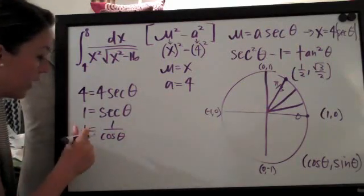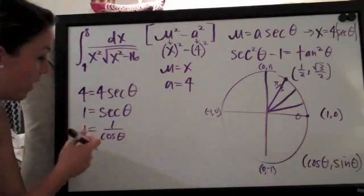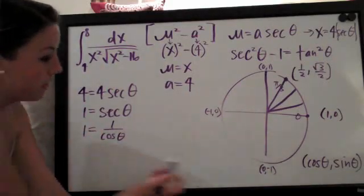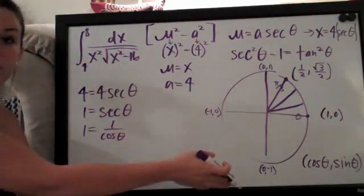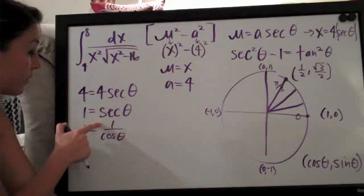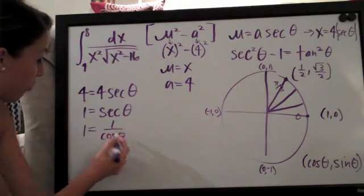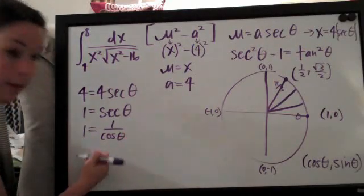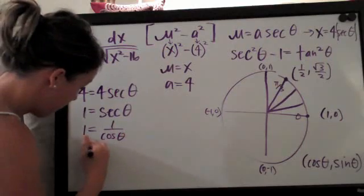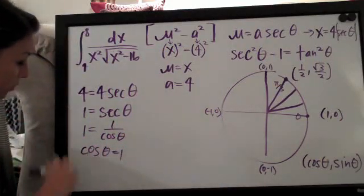We always want to, when we get to this point, if we have secant or cotangent or whatever, we want to convert it to hopefully get down to either cosine or sine because then we can use the unit circle. In this case, it's really easy because one over cosine is the same as secant, so we're left with one over cosine. If we do some algebra here, we're going to multiply both sides by cosine theta and we end up with cosine theta equals one. It just moves over to the left.